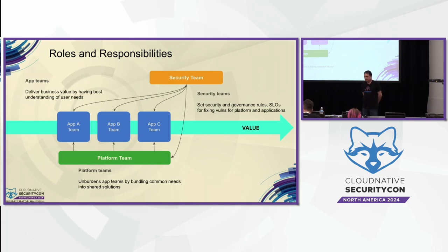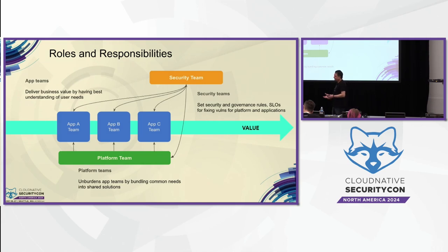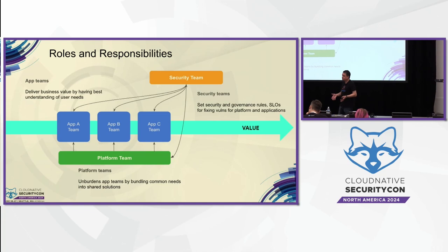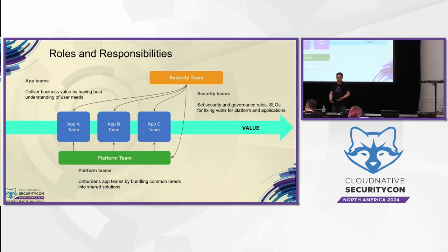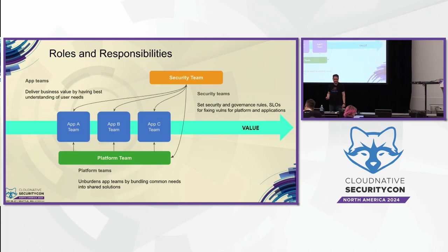You have the app teams, whose charter is to deliver business value — the more code they can deploy, the faster they can innovate, getting more features to customers. And security teams, although they sometimes get portrayed as gatekeepers perhaps hindering productivity, their job is very critical in making sure features going to customers are secure and systems cannot be penetrated at runtime or through supply chain security. All three teams need to work together, with the ultimate focus on getting features and innovation to customers as fast as possible.